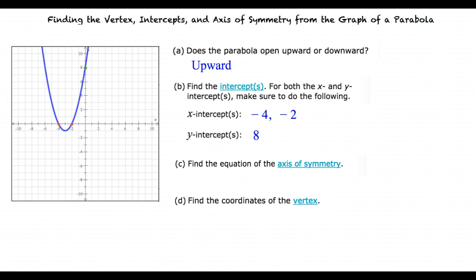In part C, we're being asked to determine the axis of symmetry. Remember, the axis of symmetry is the equation of the vertical line that divides the parabola into two mirror images of itself. So, the axis of symmetry for this graph would look like this.